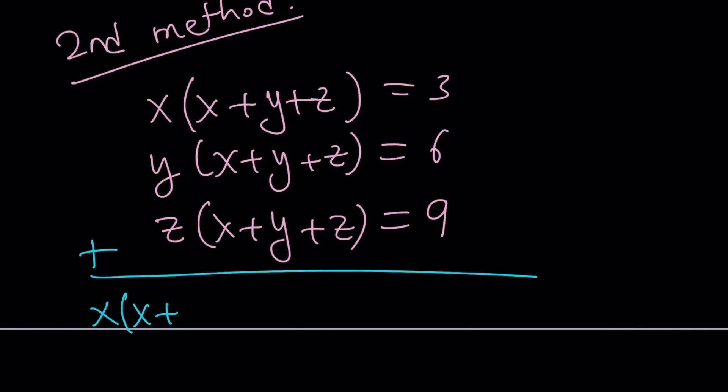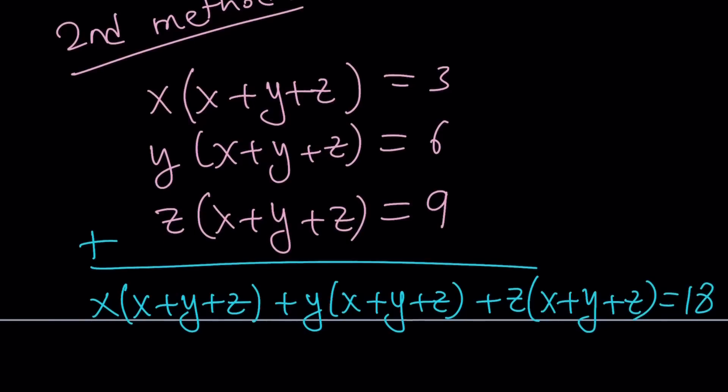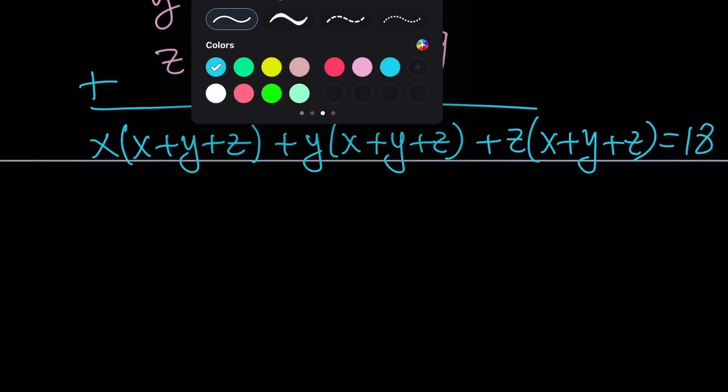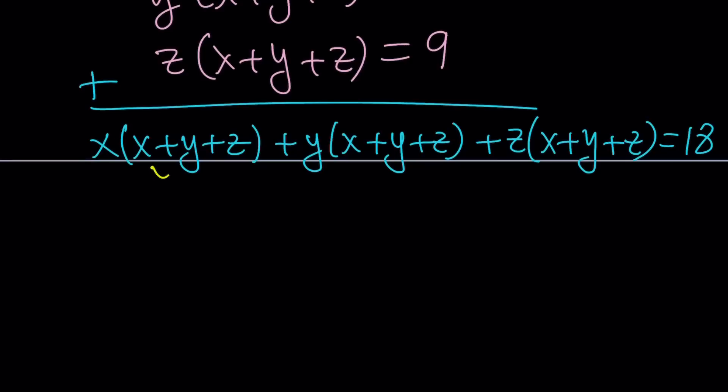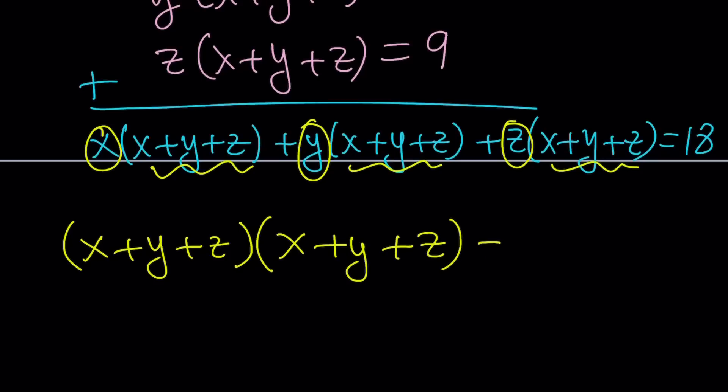So this gives us x times x plus y plus z plus y times x plus y plus z plus z times x plus y plus z. What is 3 plus 6 plus 9? I think it's 18. Now, x plus y plus z is a common factor, so I can factor that out. And when I do, I get the other factor by picking these. Those are going to be written inside the parentheses. x plus y plus z. We got the same thing.